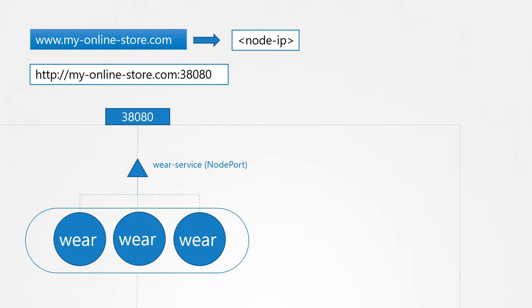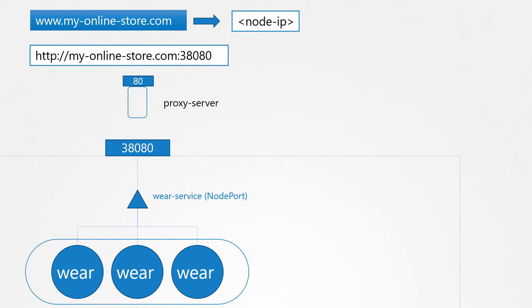Now you don't want your users to have to remember a port number either. However, service node ports can only allocate high numbered ports, which are greater than 30,000. So you then bring in an additional layer between the DNS server and your cluster, like a proxy server that proxies requests on port 80 to port 38080 on your nodes. You then point your DNS to this server and users can now access your application by simply visiting my online store.com.